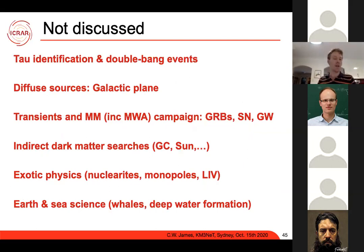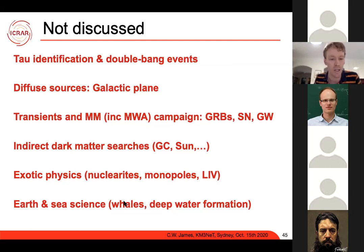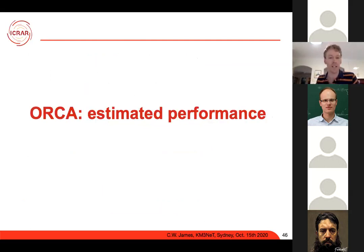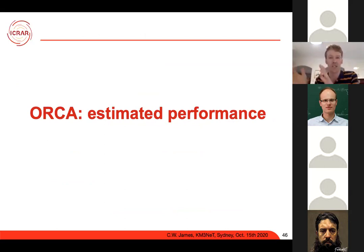Topics I haven't discussed include indirect dark matter searches and exotic physics such as magnetic monopoles, Lorentz invariance violation, and studies using the Earth and ocean sciences — including tracking whales acoustically. Now let's talk about ORCA and the neutrino mass hierarchy, which is where the particle physics community gets really interested.